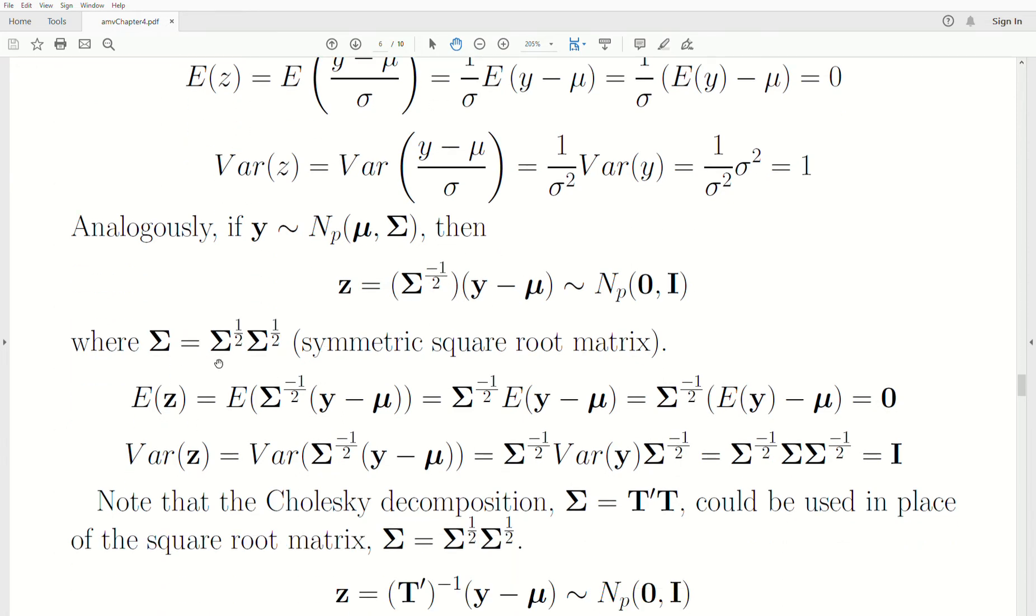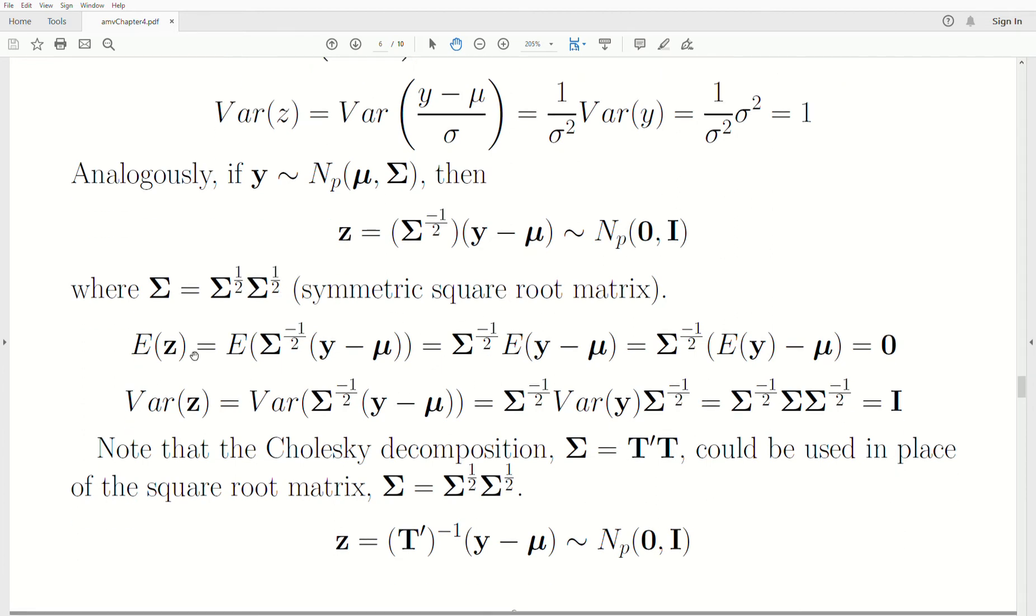Now as a reminder, sigma to the 1 half, we call the square root matrix. And to show that this transformation does work, expected value of Z is this, constant comes out front, expectation goes into the Y, expected value of Y is the mean vector, mu minus mu is 0. Now the variance is this, and so the variance is in front of this random variable, so it comes out front and then out back transposed, but the square root matrix is symmetric, so we don't need a transpose. The variance of Y is sigma, and then this reduces to I.